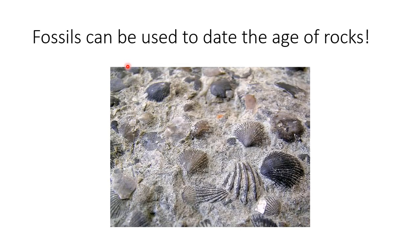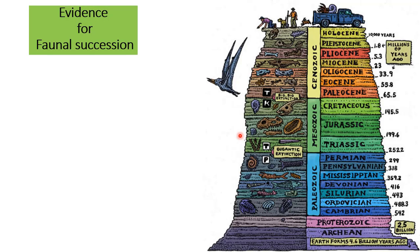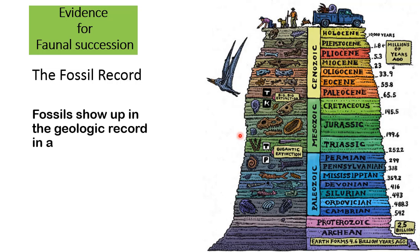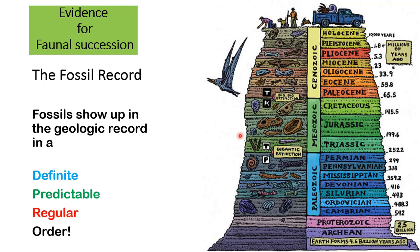Fossils can be used to date the age of rocks. Evidence for faunal succession — the fossil record. Fossils show up in the geologic record in a definite, predictable, regular order.